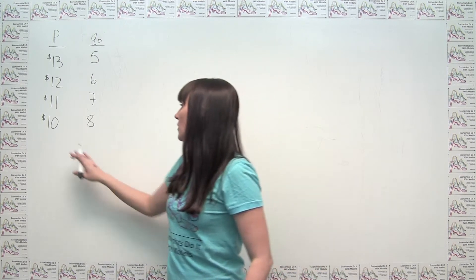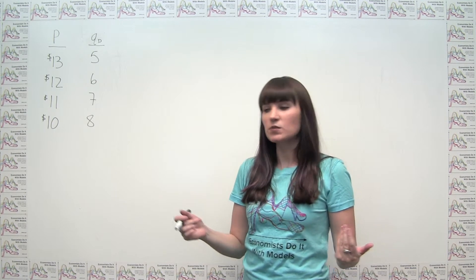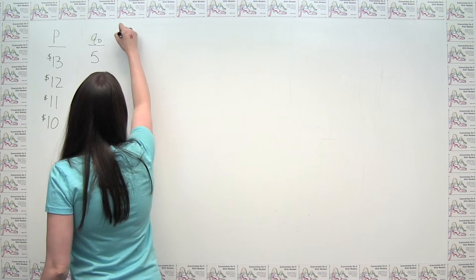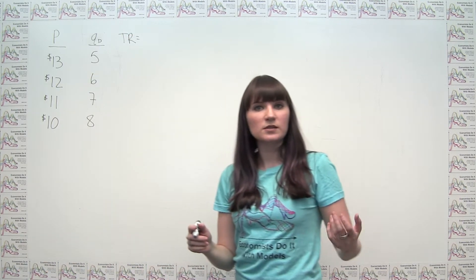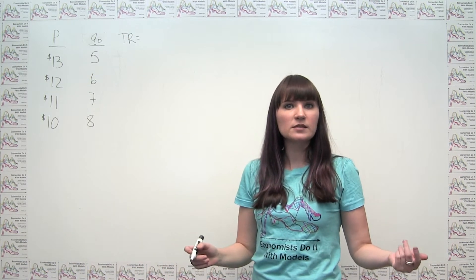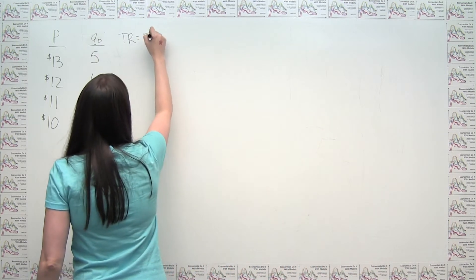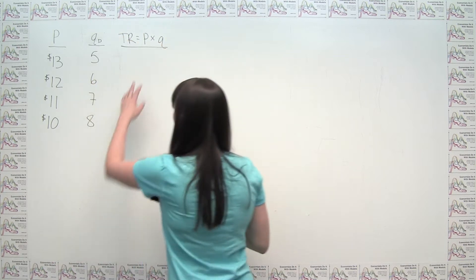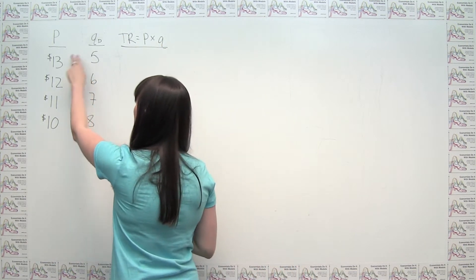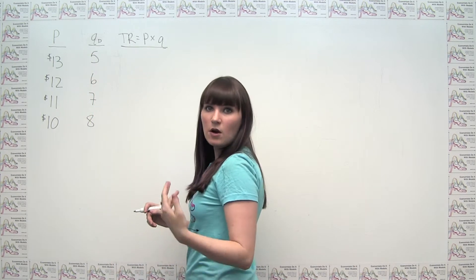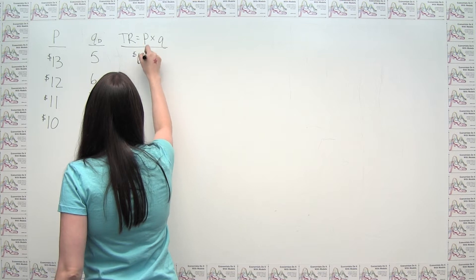The first thing I want to think about is calculating total revenue at each one of these price points. We know that total revenue, when all of our output is being sold for the same price, is pretty easy — that's just price times quantity. So if we were setting a price of $13, we'd be selling 5 units, and our total revenue would be 13 times 5, or $65.